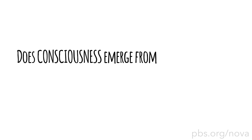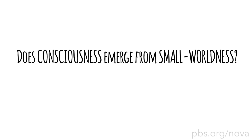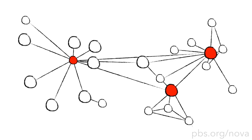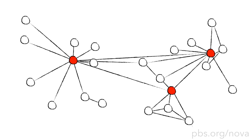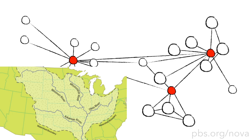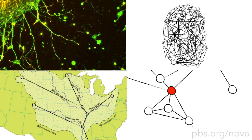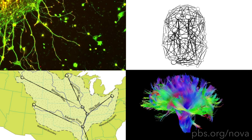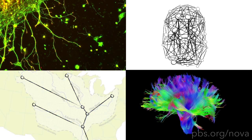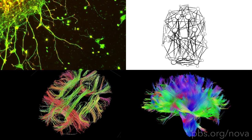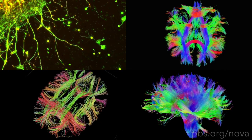If it's the connections in our brains that matter, maybe consciousness itself emerges from small world architecture. It might seem almost magical that this hub-and-spoke pattern keeps appearing all over the universe, but it's not magical, it's mathematical. We see other kinds of patterns, too, appearing and reappearing everywhere in nature.